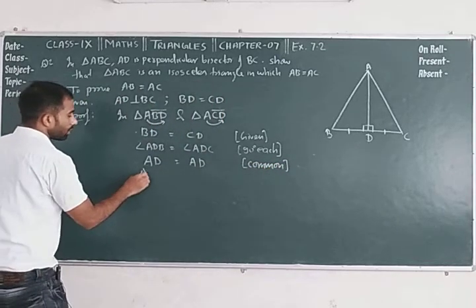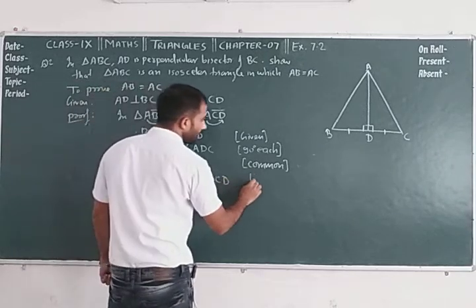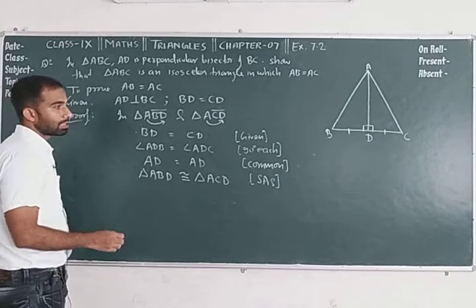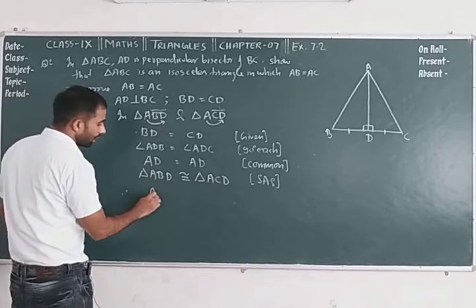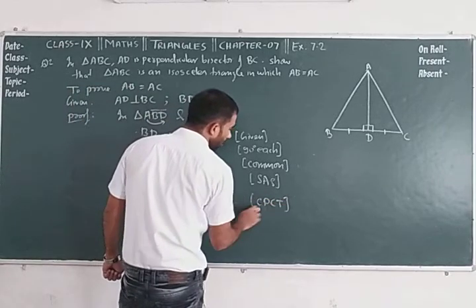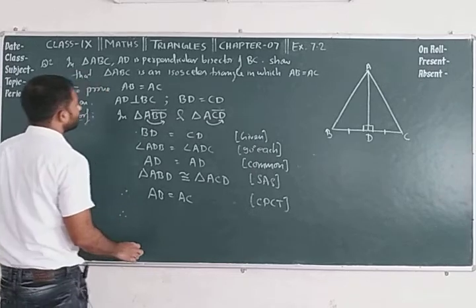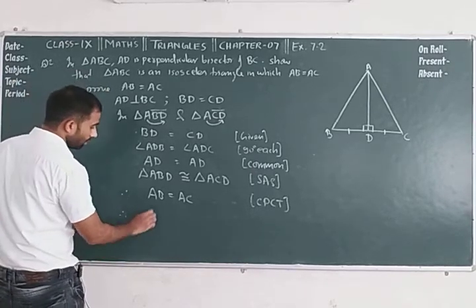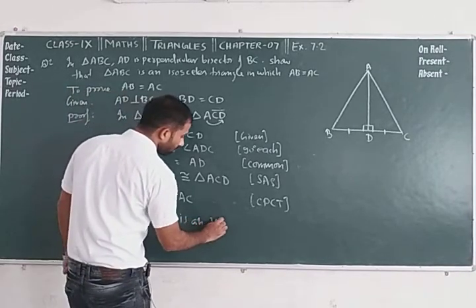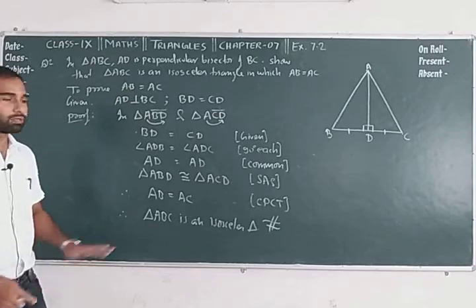Therefore triangle ABD is congruent to triangle ACD by Side-Angle-Side criteria. So by CPCT, AB is equal to AC. Hence triangle ABC is an isosceles triangle. This is a very easy question.